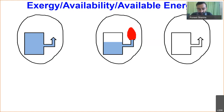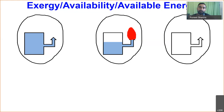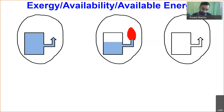Exergy is a very important property that enables us to determine what is the available potential associated with some source of energy. When exploring certain sources of energy, the amount of energy may be almost the same across different sources, but the potential for converting that energy into useful work may differ. Exergy is the property which enables us to determine this maximum potential available for work.